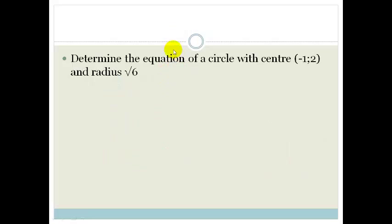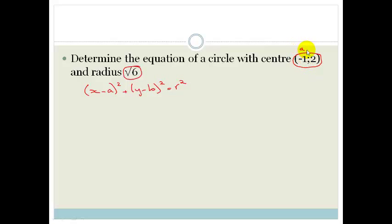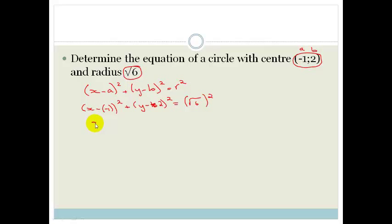Let's try another example. Determine the equation of the circle with center (-1, 2) and radius root 6. We've got our formula x minus a squared plus y minus b squared equals r squared. This becomes x minus minus 1 squared plus y minus 2 squared equals root 6 squared. I've included this because many students forget to square the radius and end up with root 6 instead of 6. Therefore, x plus 1 squared plus y minus 2 squared equals 6.